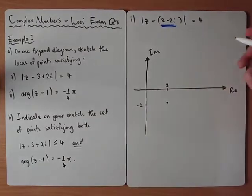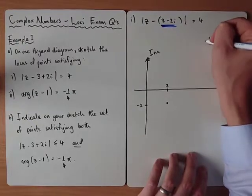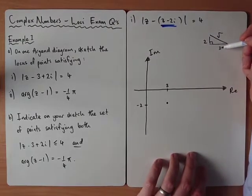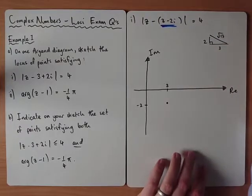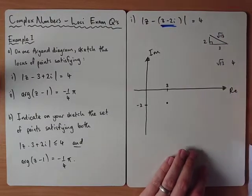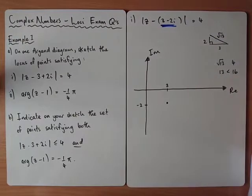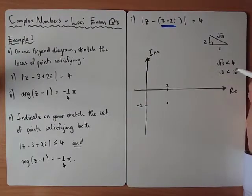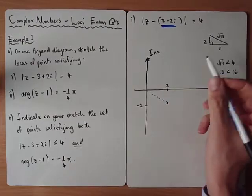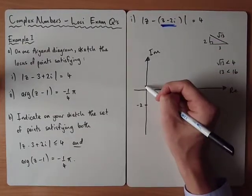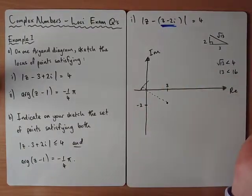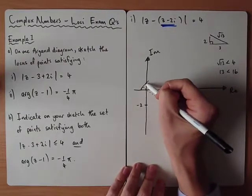Using Pythagoras on that triangle, the distance from the origin to the centre is the square root of 2 squared plus 3 squared, which is root 13. To compare root 13 with 4, we square both sides: 13 is less than 16, so root 13 is less than 4. Since the radius of 4 is bigger than the distance from the origin to the centre, the circle will pass beyond the origin on both sides.